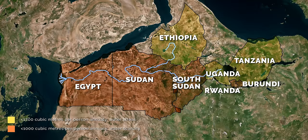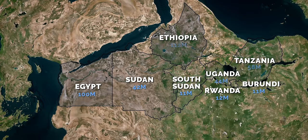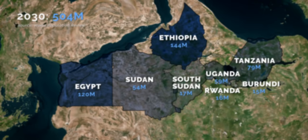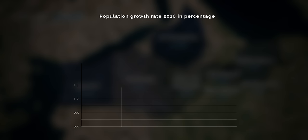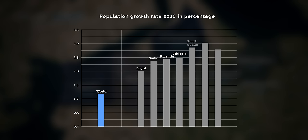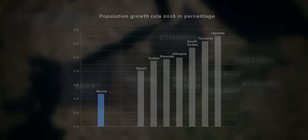Securing water supply in these countries is also a major challenge because of fast-growing populations. Taken together, 390 million people live in these countries, and in 2030 the population in this region is forecast to rise to 504 million — an increase of 114 million people. In 2016, the world population grew by 1.18%. The populations of the countries along the Nile, however, all grow well above this value, illustrating the difficulty for these nations to provide enough water infrastructure in time.